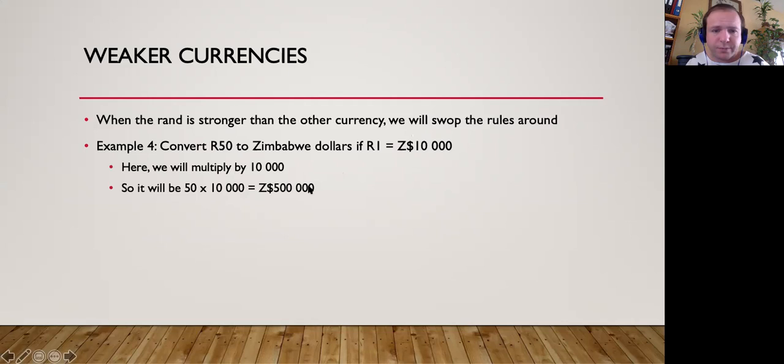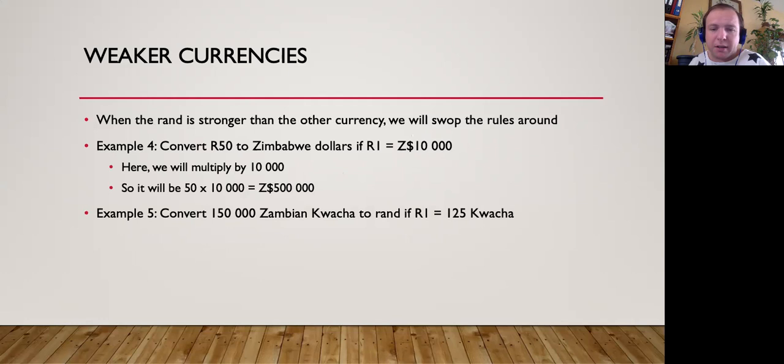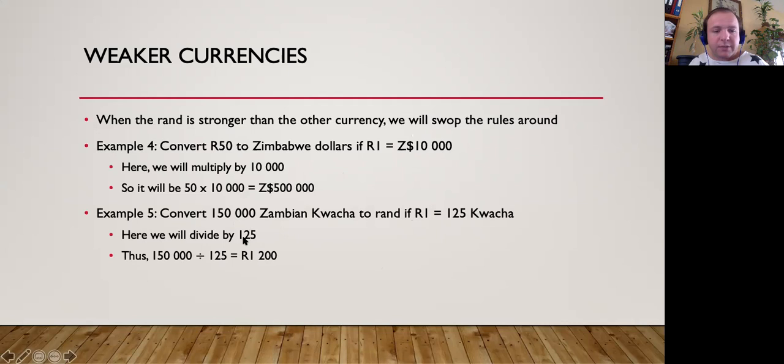Convert 150,000 Zambian kwacha to rand, if 1 rand is equal to 125 kwacha. We're going from kwacha to rand, which means we need to divide. So 150,000 divided by 125 equals 1,200 rand.